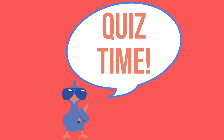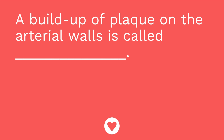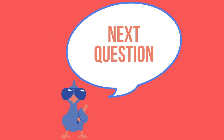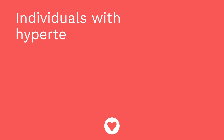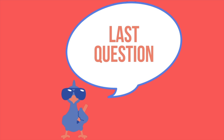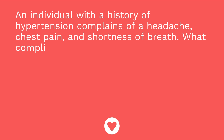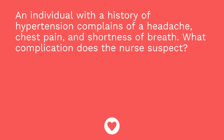It's time for a quiz. I have three questions for you. Question one, fill-in-the-blank: a buildup of plaque on the arterial walls is called blank. The answer is atherosclerosis. Question two, true or false: individuals with hypertension are typically asymptomatic. The answer is true. Question three: an individual with a history of hypertension complains of a headache, chest pain, and shortness of breath — what complication does the nurse suspect? The answer is a hypertensive crisis.